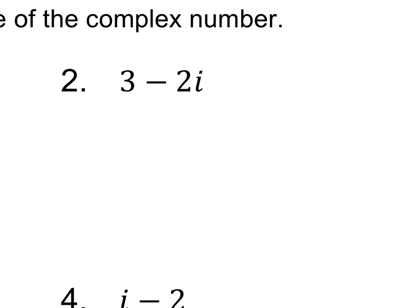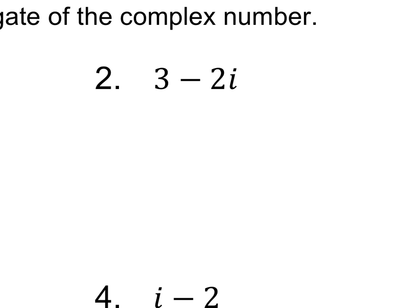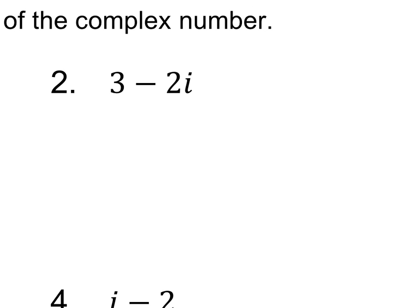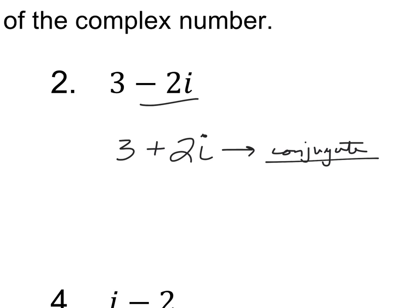This one is a little bit different because it has a real number and an imaginary number. To find the complex conjugate, I take the imaginary number and switch the sign. So the imaginary number is negative 2i — I'm going to make it positive 2i. And the real number stays the same. That right there is the conjugate. Imaginary number changes, real number stays the same.